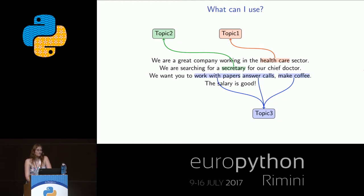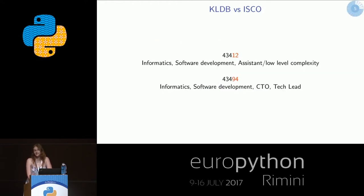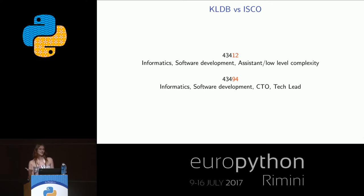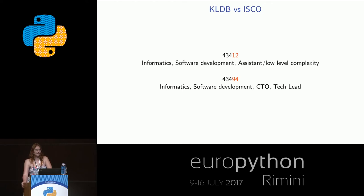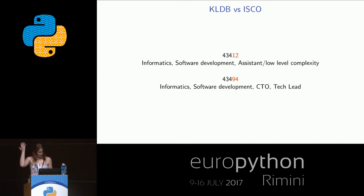Let's think again. Maybe I do have labeling — and actually I did. The month before I got this assignment, we worked with so-called KLDB or ISCO. These are international standards: the first is German, the second is an international standard for profession class defining. You can see five digits, originally defined by the German state. The first three digits define the highest level of the profession class, and then it goes down into the specifics.